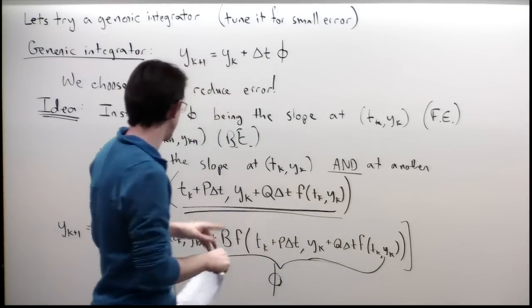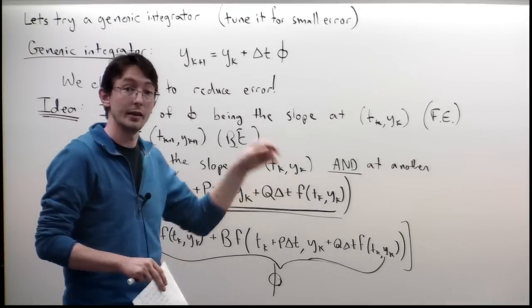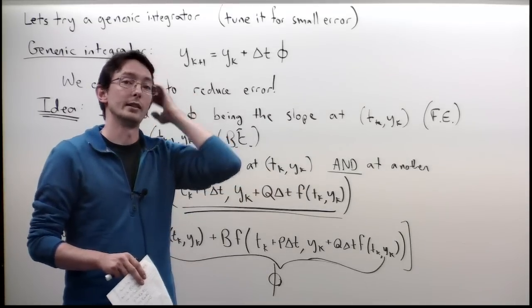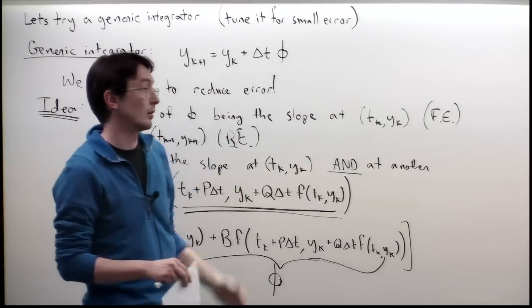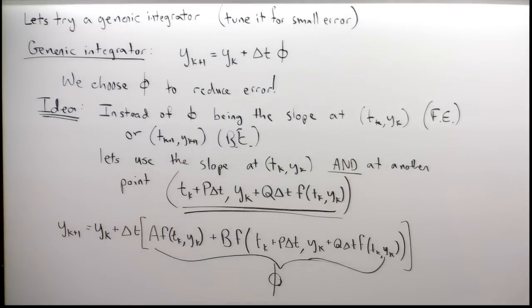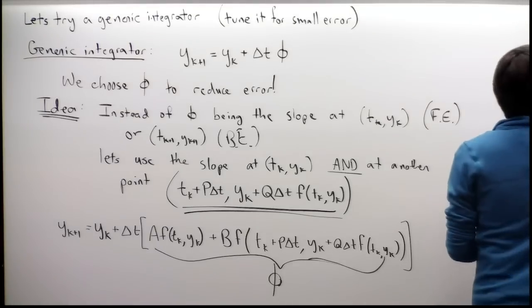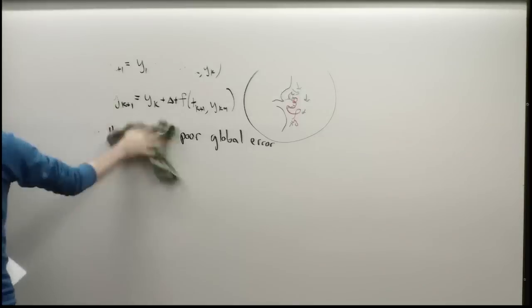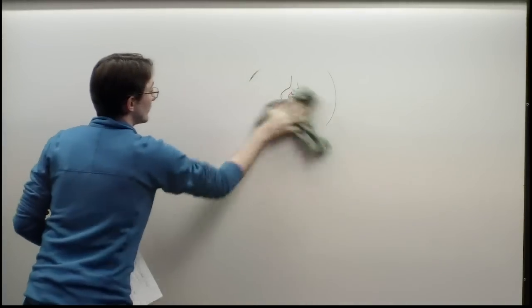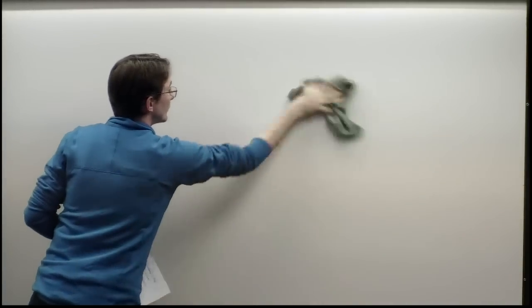We get to choose A, B, P, and Q to make this have better error properties. We want to match the Taylor series of y at time t_k plus delta-t. That's always how we assess the error of a system, so it stands to reason that if I want an iteration with really good error properties, I should Taylor expand what I think my state should look like and try to match terms as high as I can possibly go.